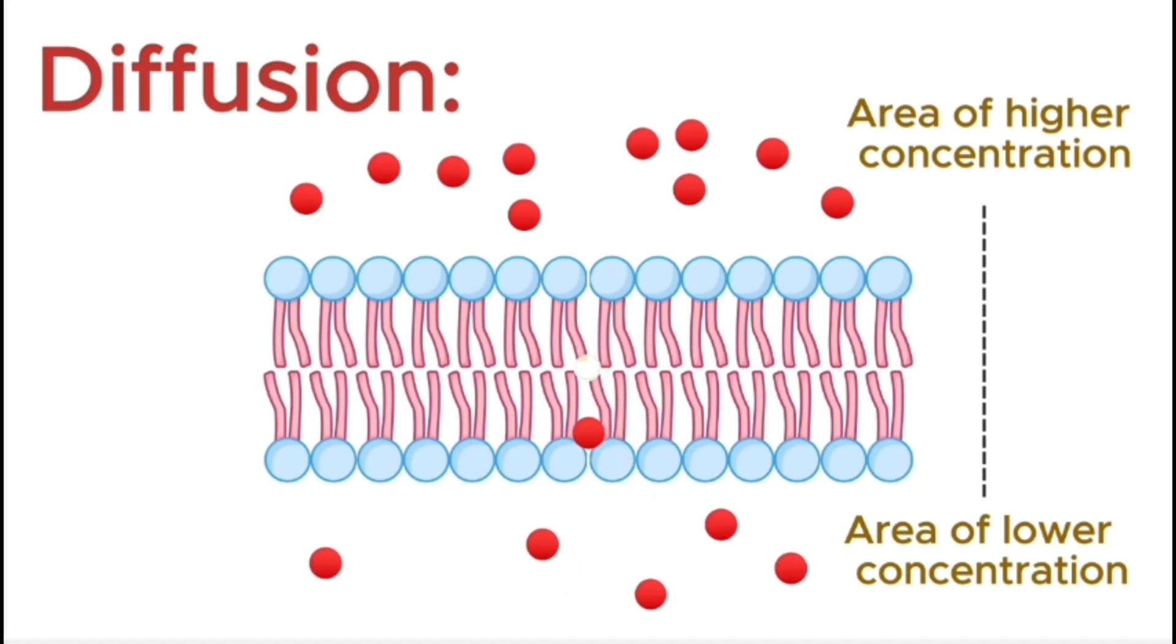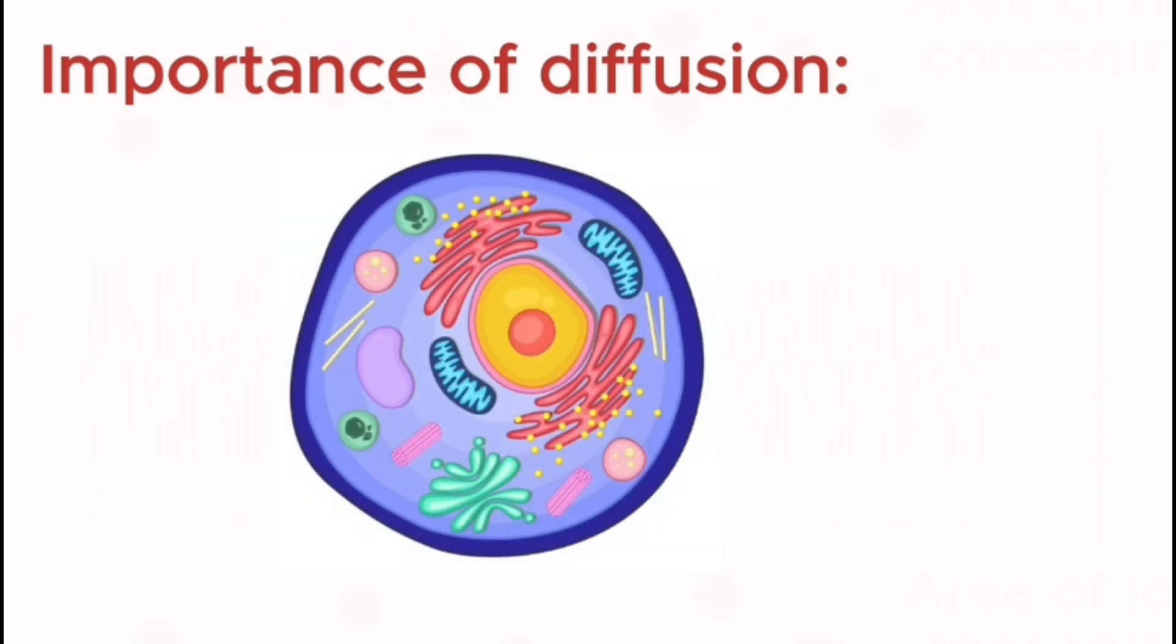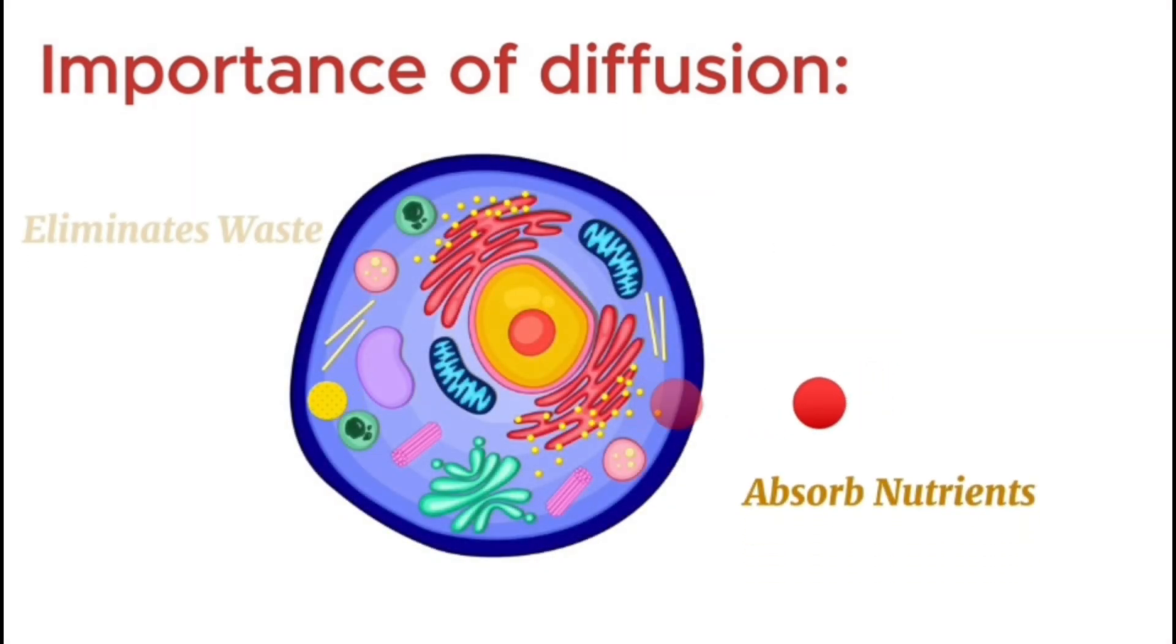This process happens naturally, due to the random motion of particles. Now let's discuss why diffusion is important. Diffusion is essential because it allows cells to absorb nutrients and eliminate waste, without using energy.